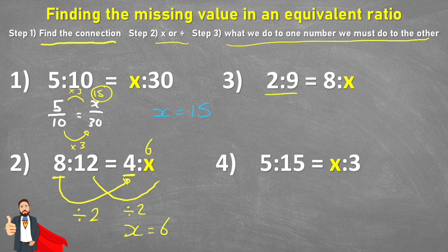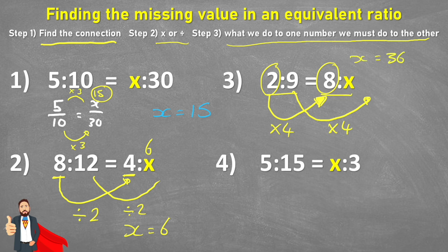Let's jump to number three. Number three says two to nine and eight to x. So again, I'm looking for that connection. We've been given the first number in each of the ratios. So I'm looking at how to get from this two to an eight. And we can see that to get from two to eight, I would need to times by four. So therefore if we're timesing the first number in the ratios by four, we would also need to times the second number in the ratio by four. And nine times four is 36. So in this case, x equals 36. So two to nine is equivalent to eight to 36.